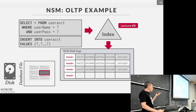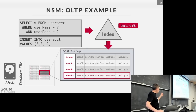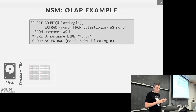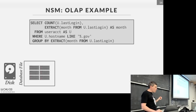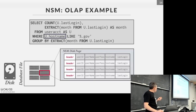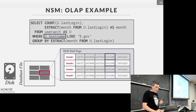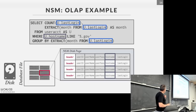For an insert, we look in our page directory, find a page with a free slot, and bring it in. Now consider the OLAP query scanning for hostnames ending in .gov — in this case I have to scan all the pages in the table, look at every user account. The only data I really need to look at is the hostname and the last login for the GROUP BY aggregate.